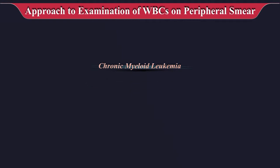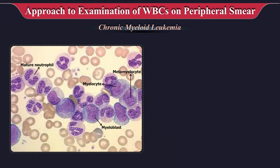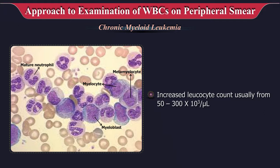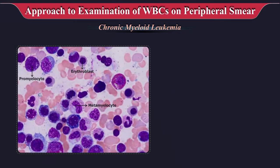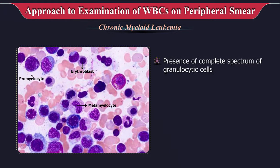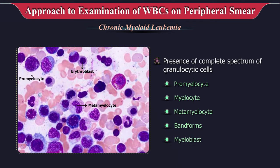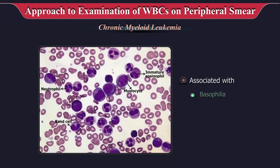Chronic myeloid leukemia usually has a classical picture with increased leukocyte count, typically from 50 to 300 × 10³ per microliter or higher. There is presence of a complete spectrum of granulocytic cells — promyelocytes, myelocytes, metamyelocytes, band forms, and myeloblasts — usually associated with basophilia, eosinophilia, and thrombocytosis.